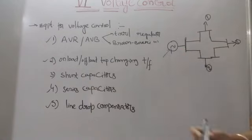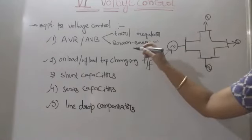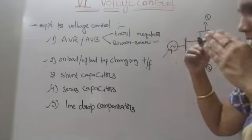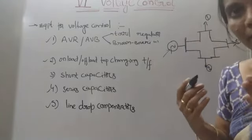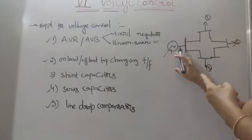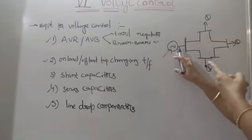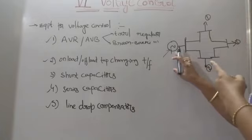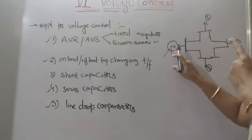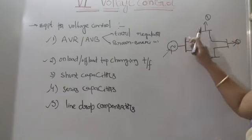AVR is the equipment where the function of AVR is mainly used to monitor the generator voltage at the output terminals of the generator. This voltage must be maintained at the bus bar of that transmission or distribution system.